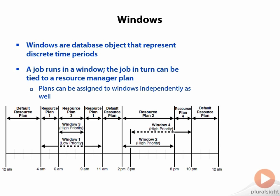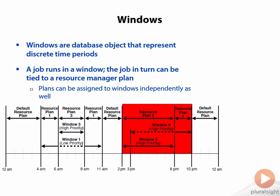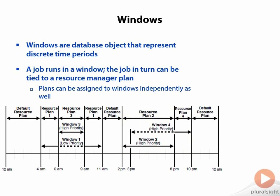It gets harder yet. If you have two windows with jobs both running at the same priority — windows two and four are both running during the same interval between 3pm and 8pm, both high priority — window two gets precedence because it started first. The bottom line: I'm showing you kind of the worst practice. You want to be as simple as possible in your relationship between resource plans, windows, jobs, and schedules.